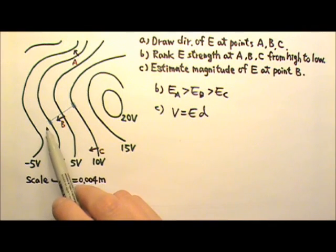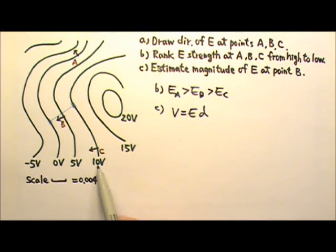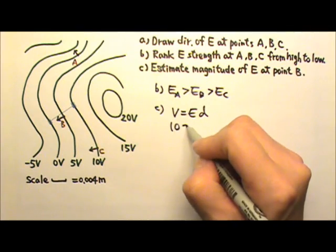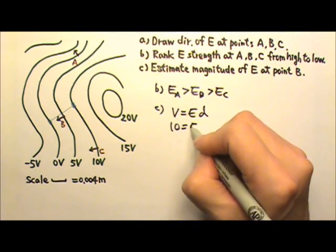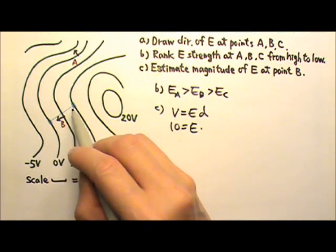So the voltage across this region is 0 to 10, so it's 10 volts, and that equals E times the distance right here.